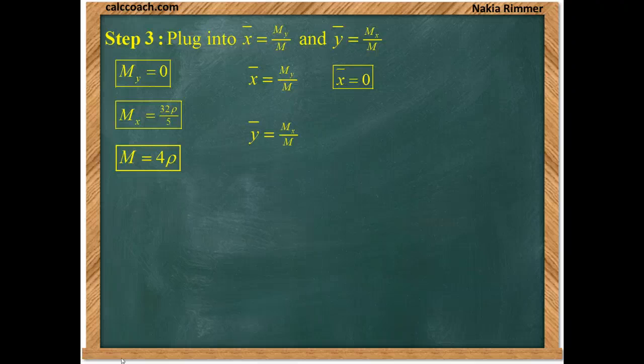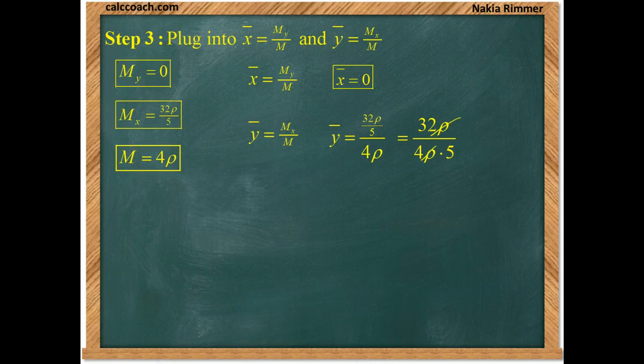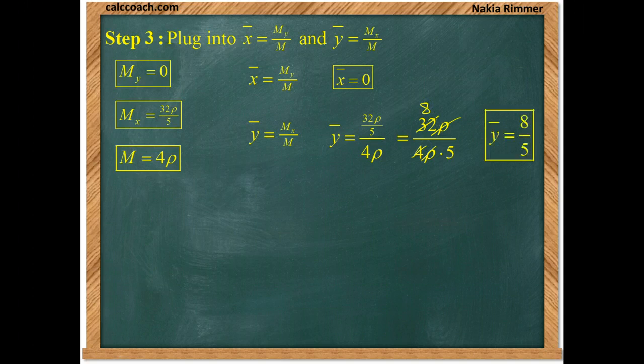And then, we have y-bar, which is the moment about the x-axis, divided by the mass. So, 32 rho over 5 divided by 4 rho. The 5 comes down and multiplies the 4 rho. But then, we can cancel the rho on the numerator and denominator. And the 32 can be turned into an 8. So, we have 8 fifths as the y-coordinate of the center of mass.